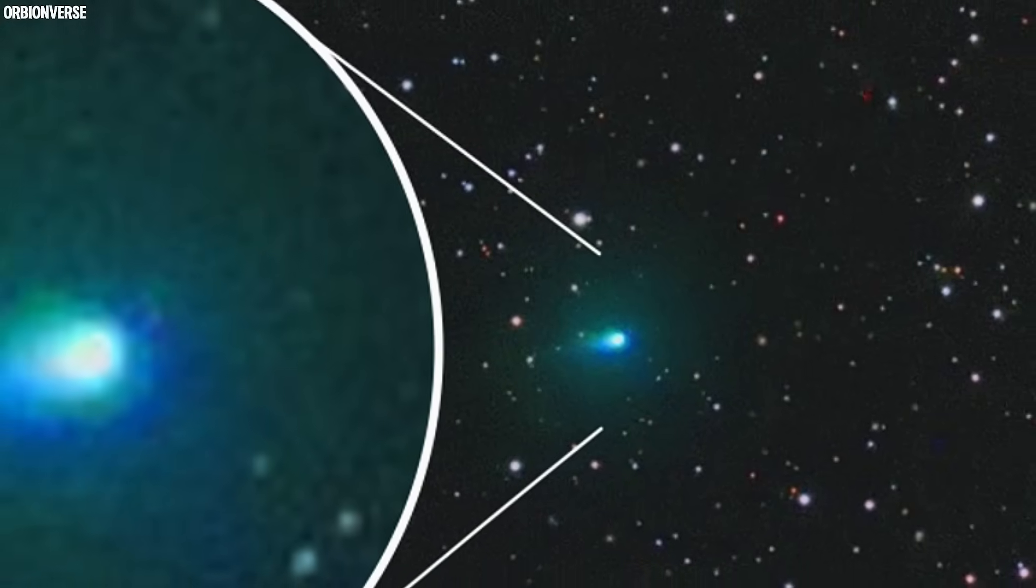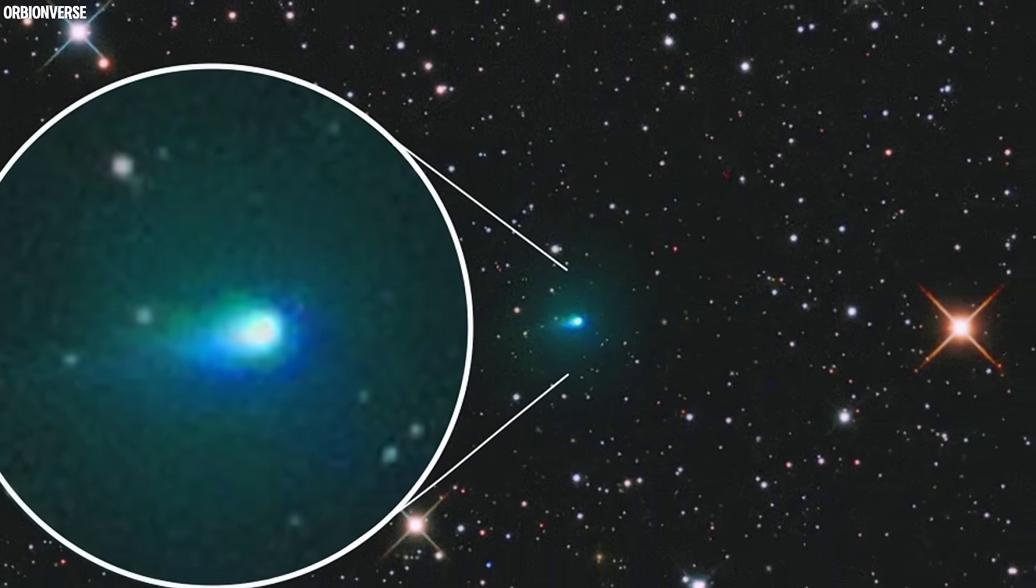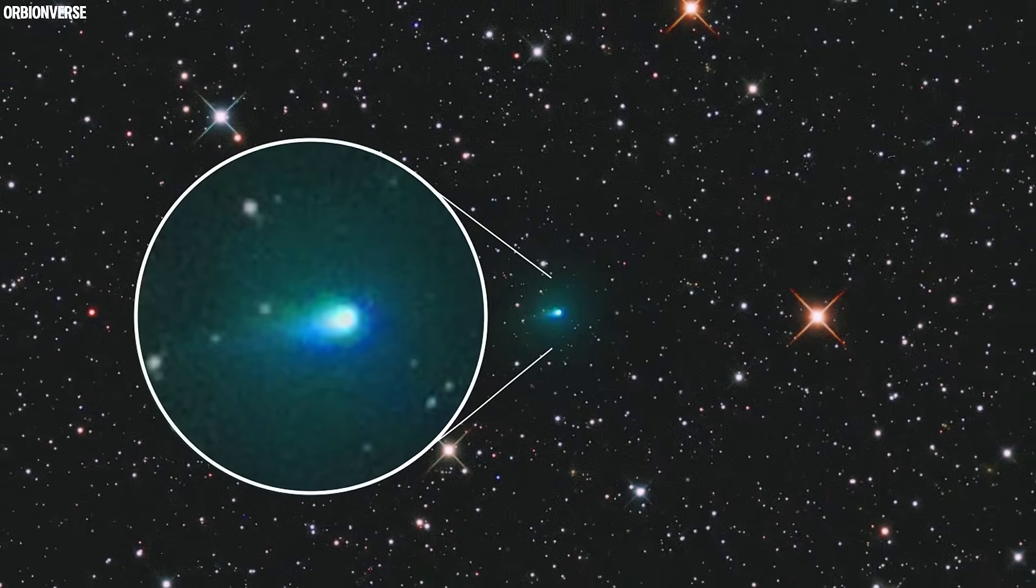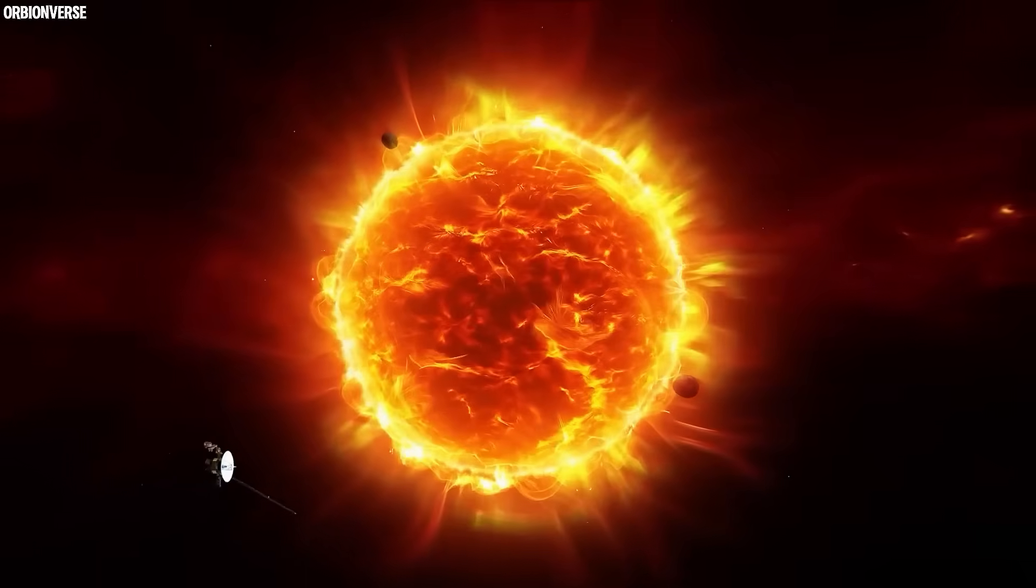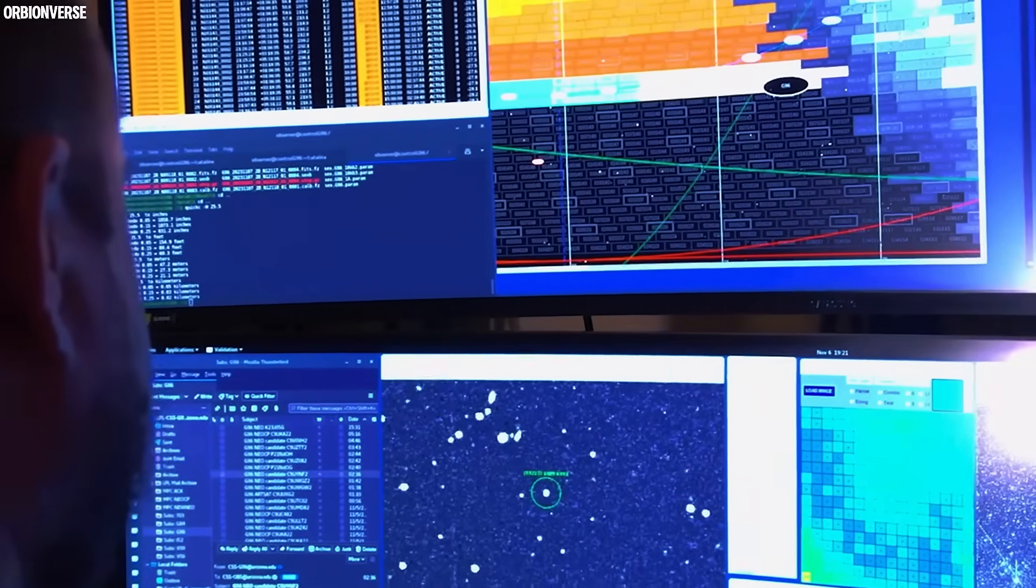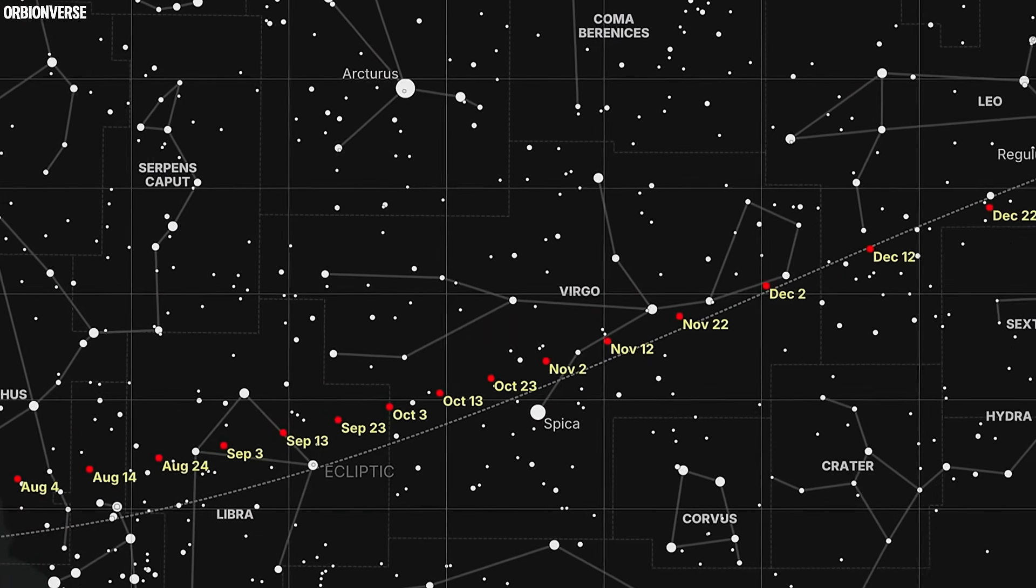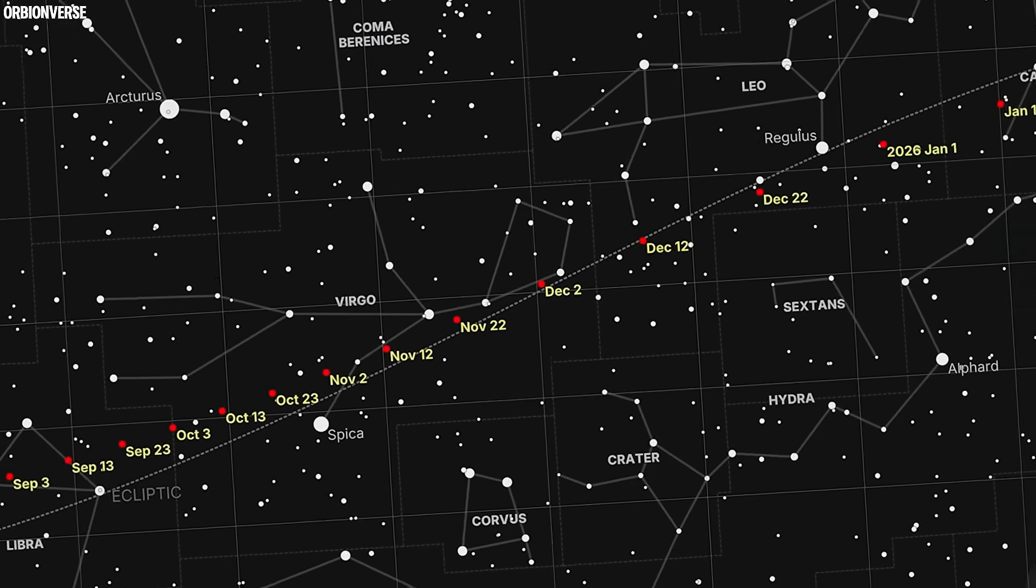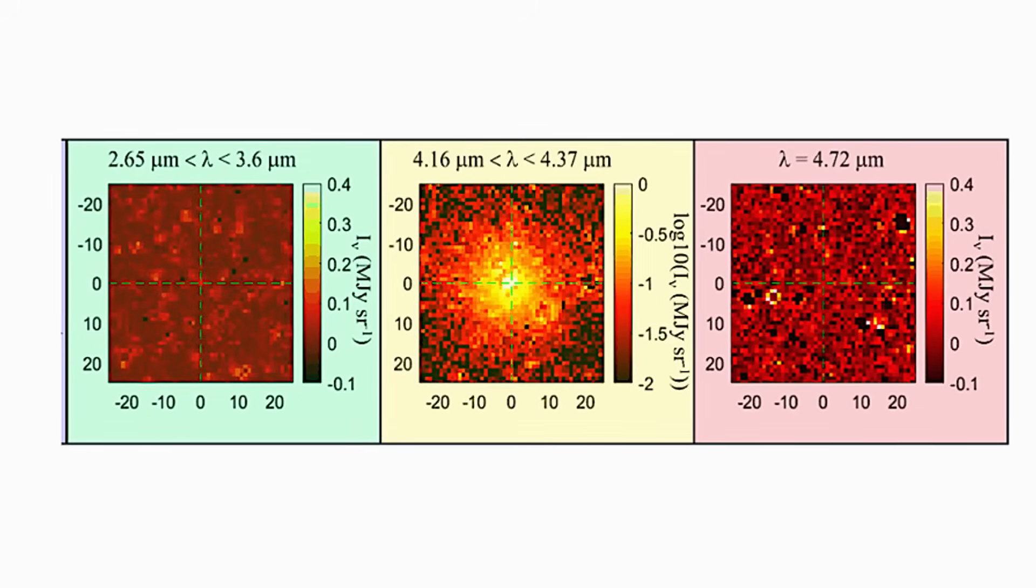By the time it crossed Mercury's orbit, its coma stretched nearly half a million kilometers, a luminous sphere wider than the sun itself. Solar probes had to recalibrate just to survive the glare. At NASA's Deep Space Network, the data feeds came in like a storm of numbers, spectral signatures that belonged nowhere on the periodic table, ultraviolet frequencies that pulsed with mechanical precision.